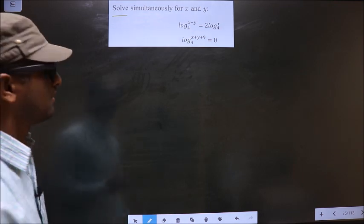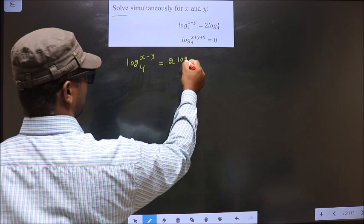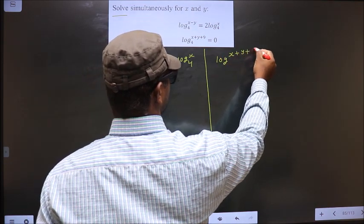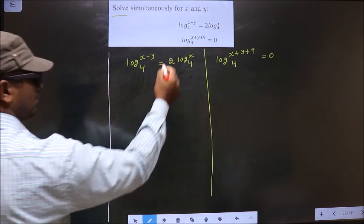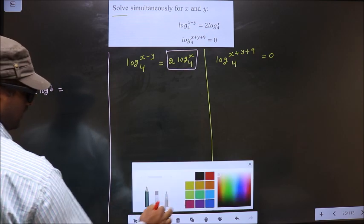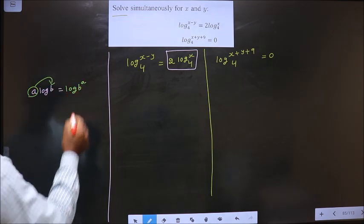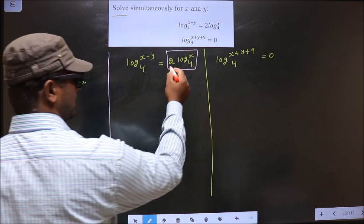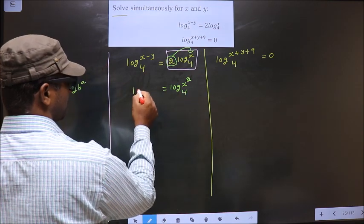The given equations are log₄(x - y) = 2log₄(x) and log₄(x + y + 9) = 0. I'll apply the formula where a log b becomes log(b^a). When you have a number before the log, it goes as the power. So the 2 becomes a power, making it log₄(x²).